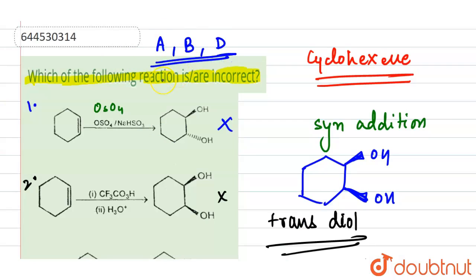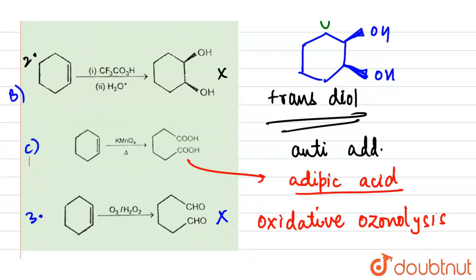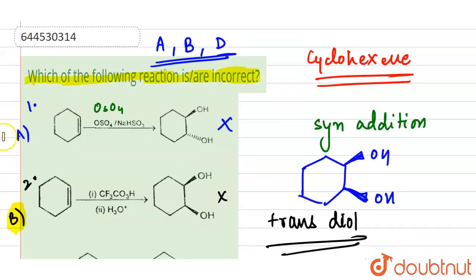So our answer includes options A, B, and D, because these are the incorrect reactions. Labeling them as A, B, C, and D, the correct answer is options A, B, and D.